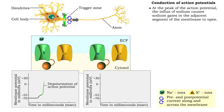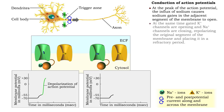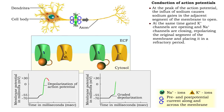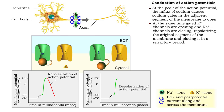When the action potential reaches its peak, the positive nature of the membrane causes potentials to spread to the adjacent segment of the membrane. Simultaneously, repolarization of the first segment of membrane begins with the opening of voltage-gated potassium channels and the inactivation of the sodium channels.